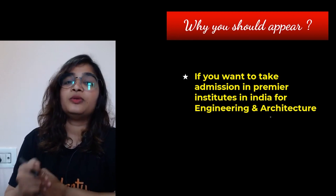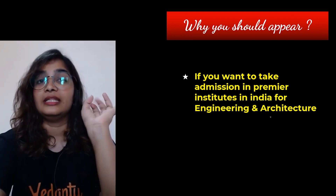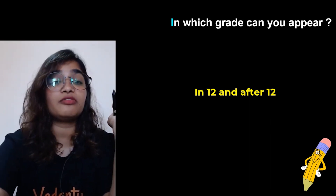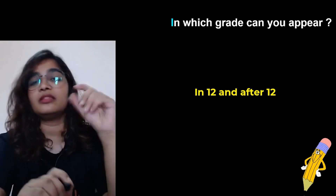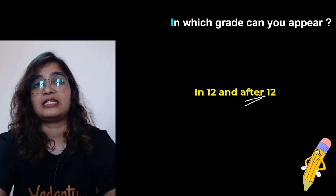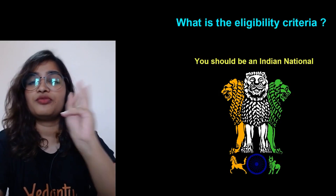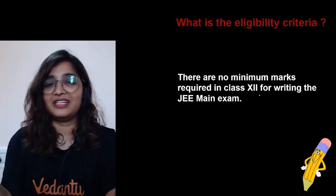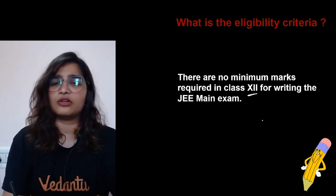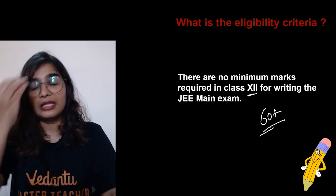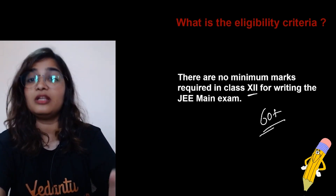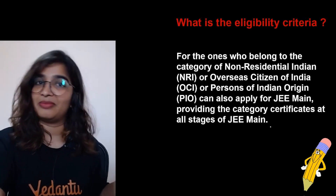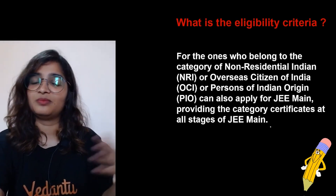If you want to take admission in those premier institutes in India for engineering and architecture, you can attempt this examination. In which grade can you appear? You can appear in Grade 12, and also after Grade 12. What are the eligibility criteria? First, you should be an Indian national — a citizen of India. There are no minimum marks required in Class 12; there is no cutoff like 60% to write JEE Main. I'm talking about JEE Main, not Advanced — that will have a separate video.